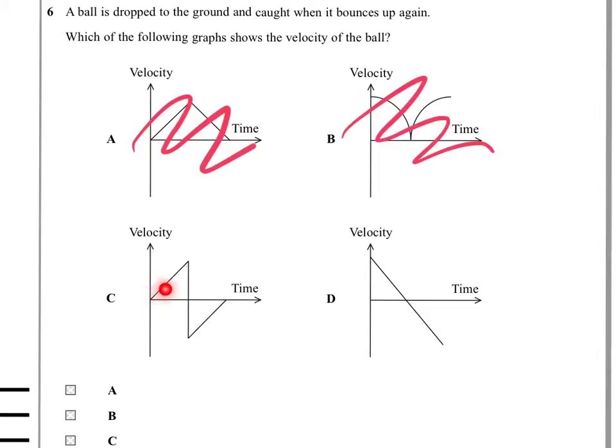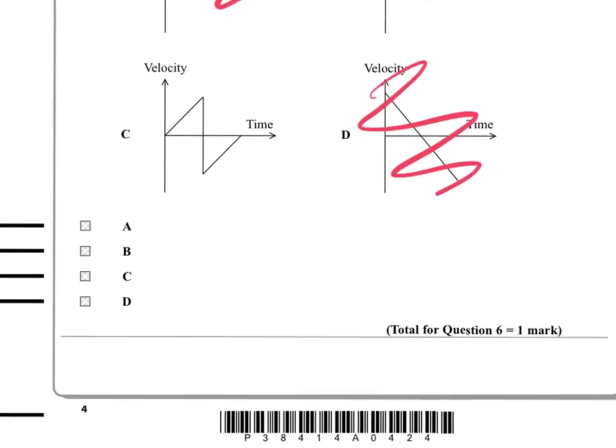This one is an object being dropped. Its velocity increases in the downward direction, then it bounces, which gives it an abrupt change, a reversal of sign to an upward velocity. And that upward velocity is then decreasing all the time until the object is caught. So it's C. We're looking at it, we can rule out that one and put in C.